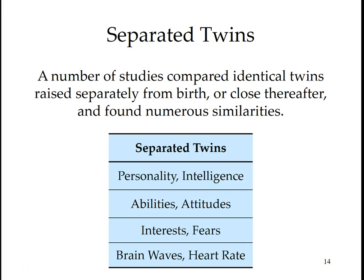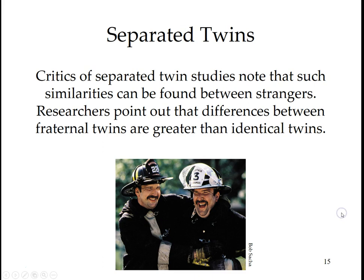A number of studies comparing identical twins raised separately from birth or shortly thereafter found numerous similarities, such as personality, intelligence, abilities, attitudes, interests, fears, brain waves, and heart rates. However, critics of separated twin studies note that such similarities can be found between strangers. Researchers point out that the differences between fraternal twins are greater than between identical twins. Adoption studies suggest that adoptees tend to be different from their adoptive parents and siblings, and strongly point to the fact that biologically related children can turn out differently within the same family.